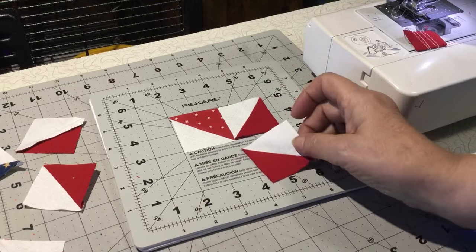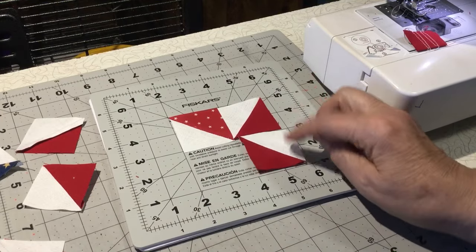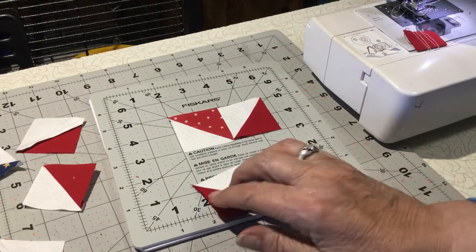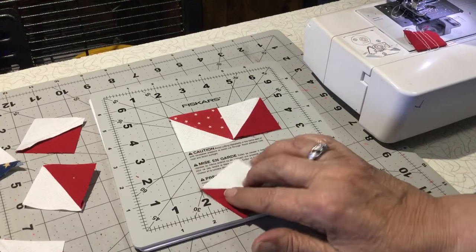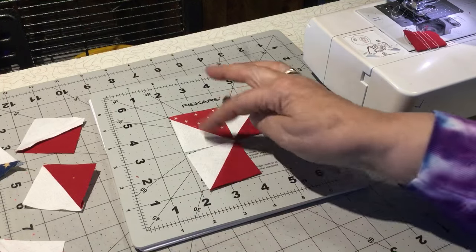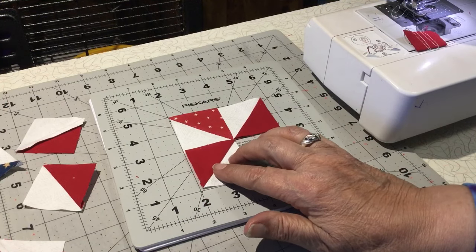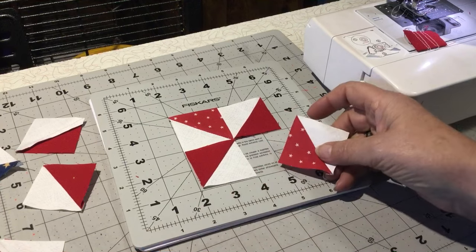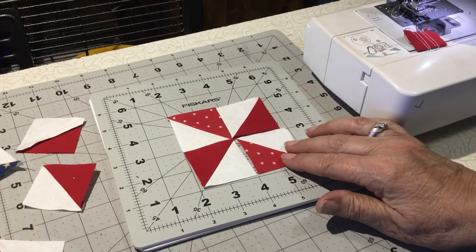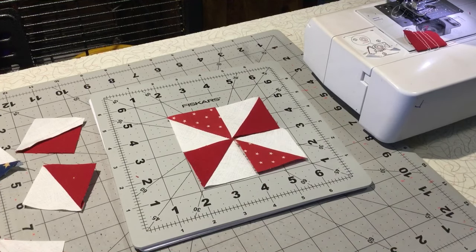So again here, oh, I don't want the red against the red, so I need, see if I put it this point to point, I'm back to the flying geese unit, look. But if I put this point to point, and then this point to point, that's the Jenny Doan way.